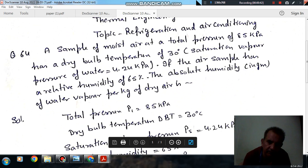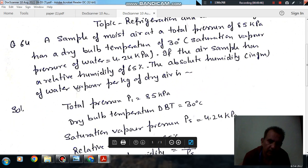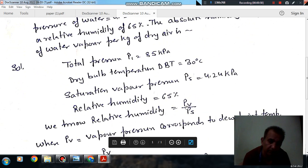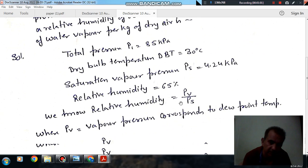So, total pressure is 85 kPa, dry bulb temperature is 30 degrees, and saturation pressure is given as 4.24 kPa. Relative humidity is given as 65%. You know that relative humidity is the ratio of vapor pressure to saturation pressure. Since saturation pressure is given, we can find out PV.